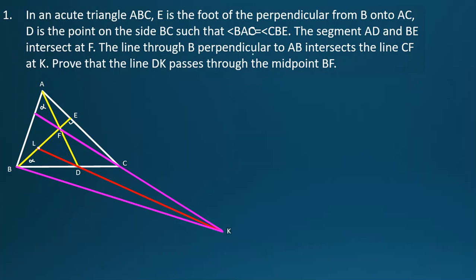The line through B perpendicular to AB intersects the line CF at point K. Prove that the line DK passes through the midpoint BF. It means that we should prove BL equals LF.